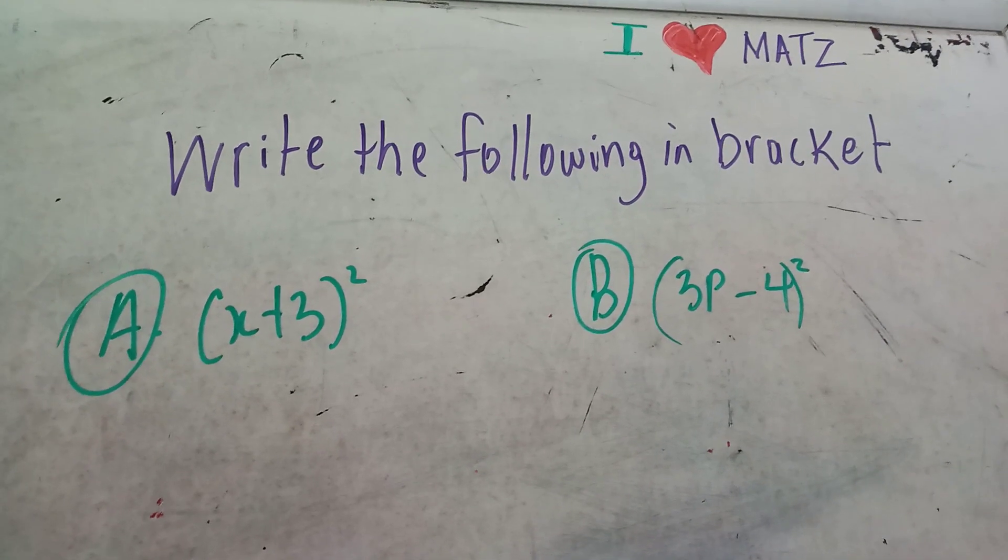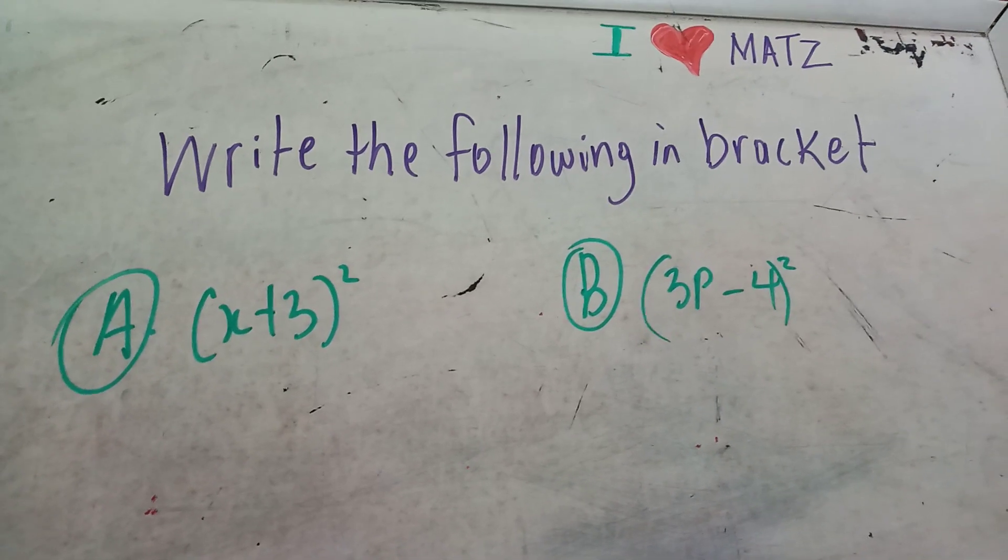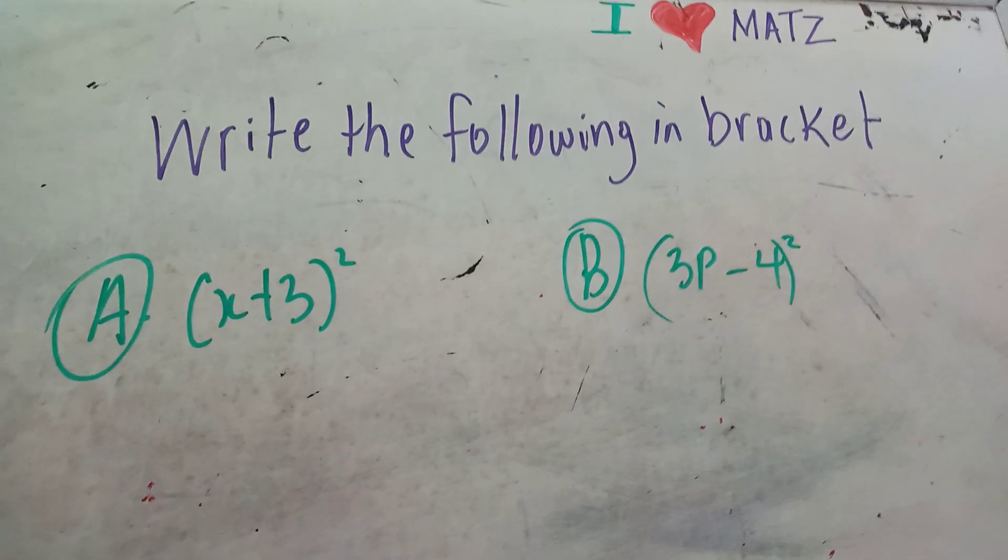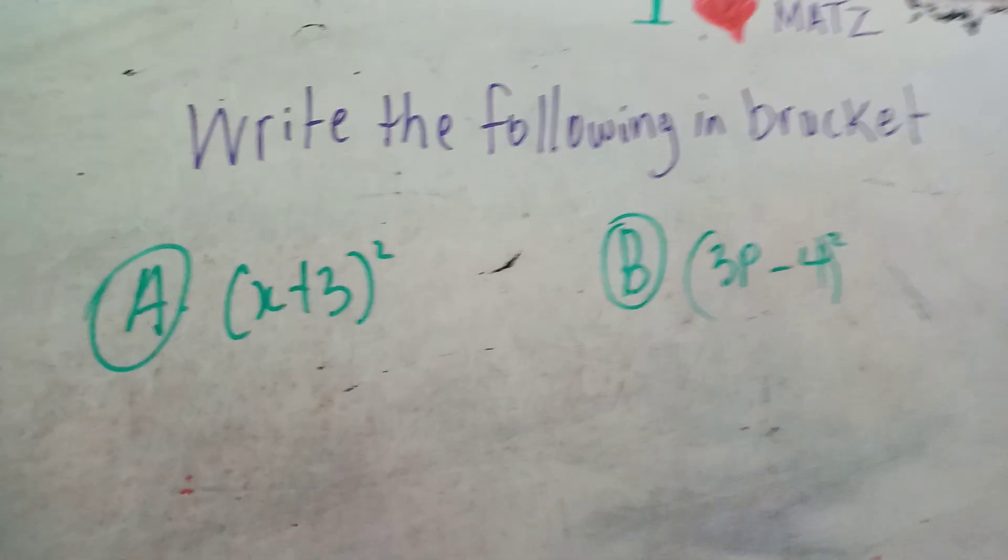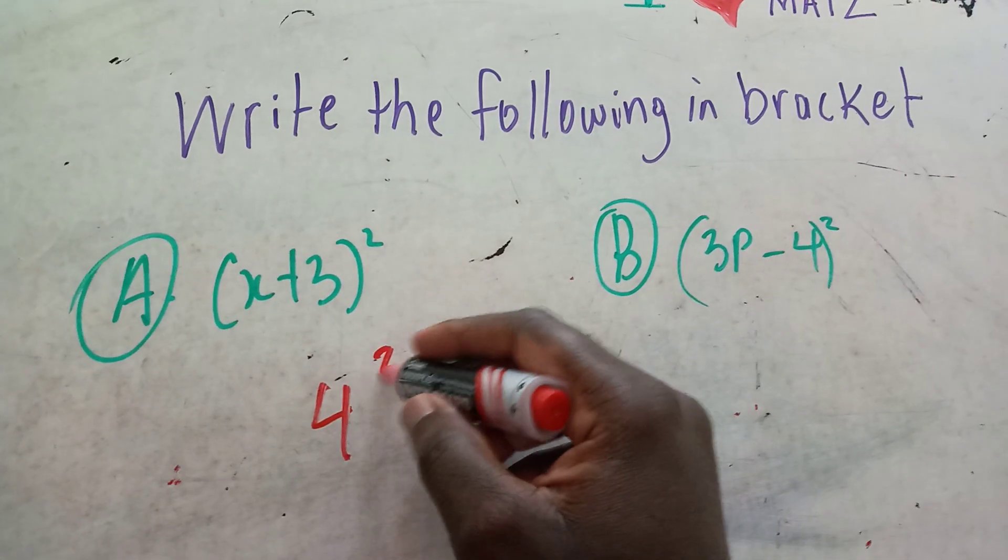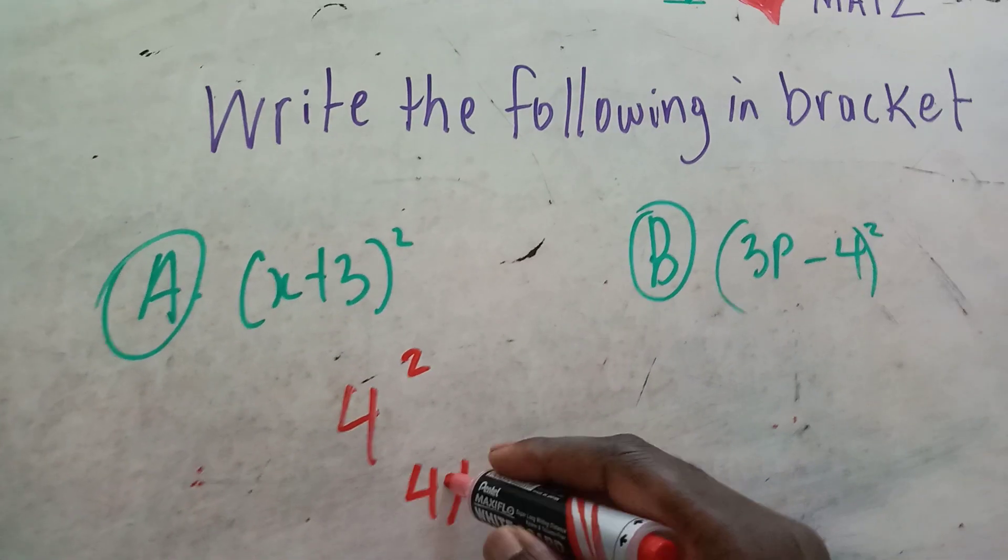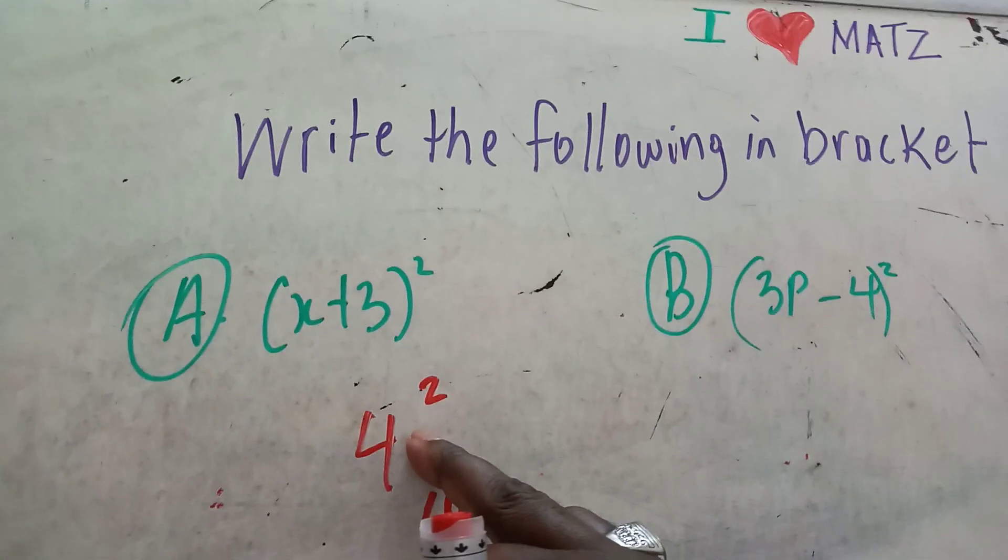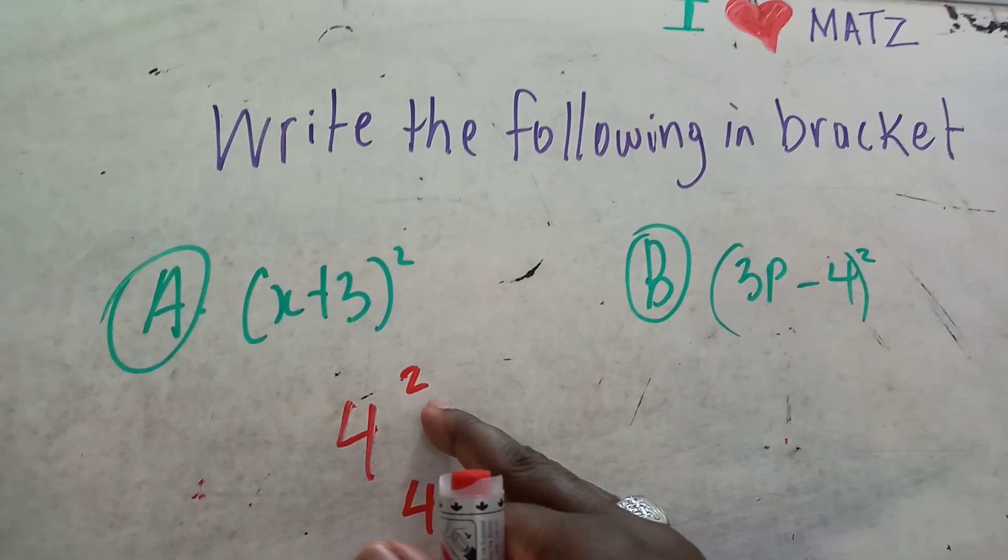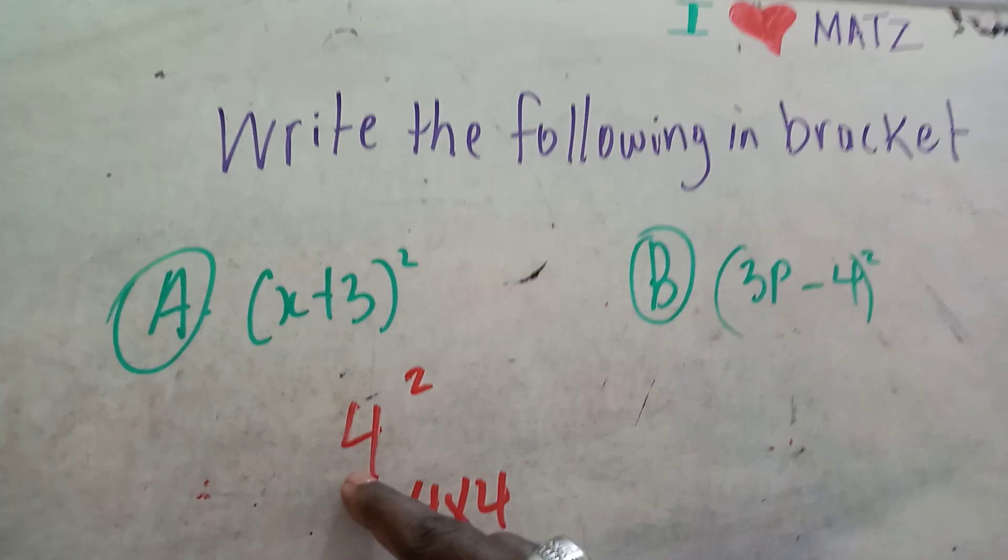It's saying 'all square', the same way you would have four squared, which is four times four. This is indicating to you how many times you should multiply the base number by itself.